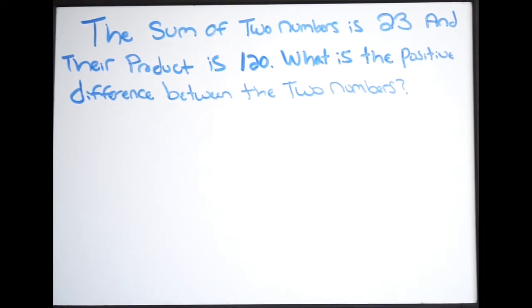Okay, so in this example it says the sum of two numbers is 23 and their product is 120. What is the positive difference between the two numbers? So in order to do this particular problem, we're going to have to set up a system of equations, and in particular a 2x2 system of equations.